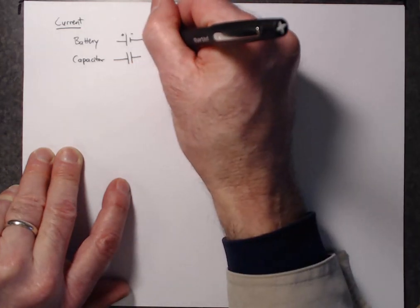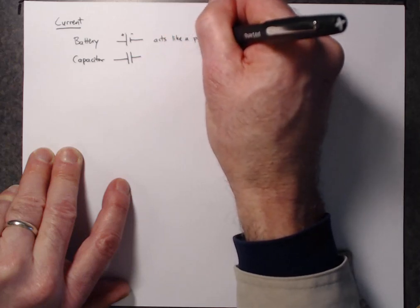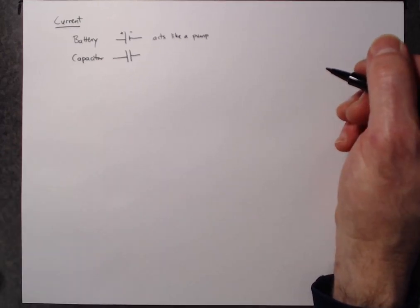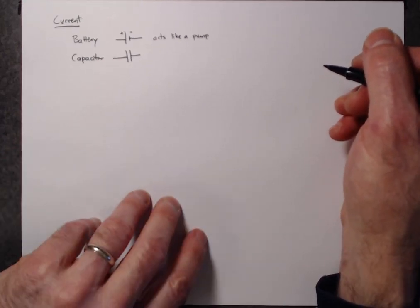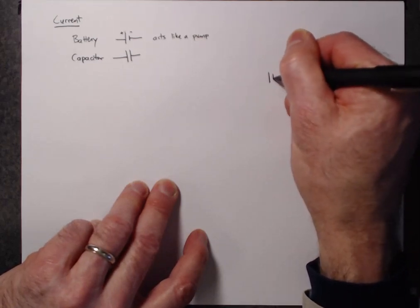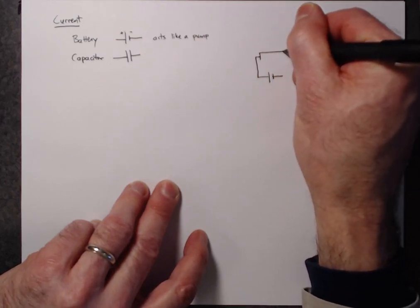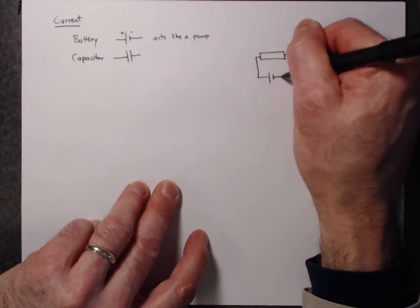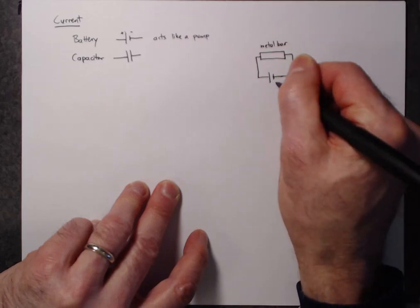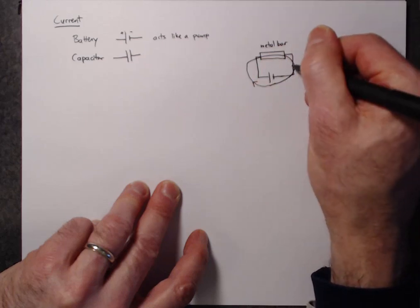The battery acts like a pump for charge. And we'll talk more in detail about models for batteries in a later lecture. But now let's consider a fairly simple circuit where I'm going to take a battery and connect the two ends of it to a metal bar. So here's a metal bar. And the battery is simply going to pump charge around and around this circuit continuously.